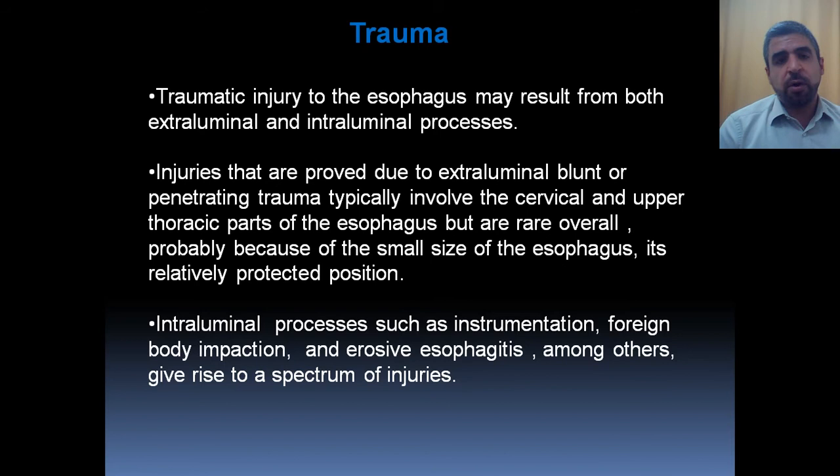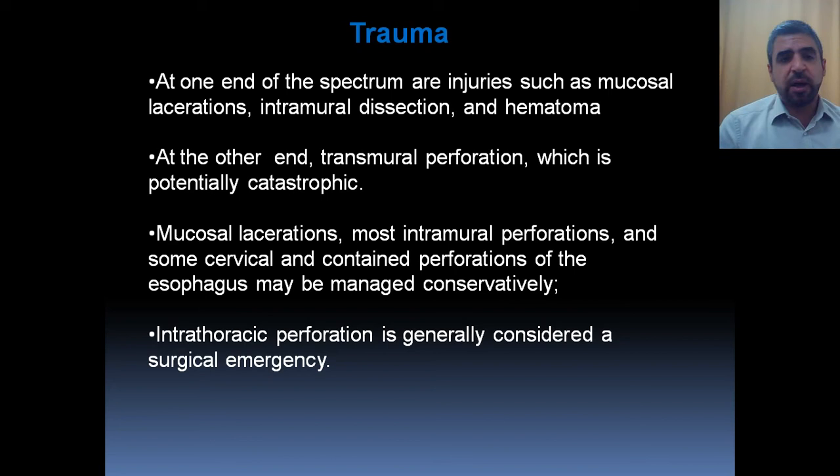For example, instrumentation, endoscopies, foreign body impaction, caustic esophagitis, and other pathological processes may give rise to a spectrum of injuries ranging from mild to severe. At the mild end, there are injuries such as mucosal laceration; more severe injuries include intramural dissection and hematoma; and at the severe end, transmural perforation can be a catastrophic injury to the esophagus.